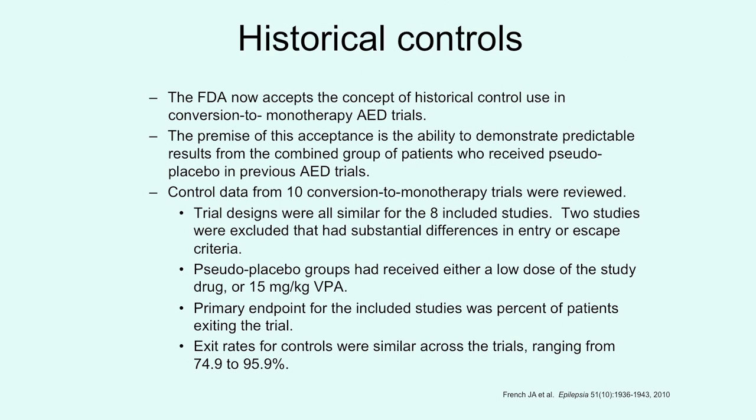The FDA now accepts the concept of using historical controls in conversion to monotherapy trials, based on demonstrating that the pool of patients who received pseudo-placebo has a predictable response. Jackie French published a study that looked at 10 conversion-to-monotherapy trials; two were excluded because of differing methods and eight were included. In all of these trials, the control population received either pseudo-placebo, a low dose of the study drug, or 15 mg/kg of valproate. The primary endpoint was the percentage of patients who exited the trial, and exit rates ranged from 75 to 95 percent.